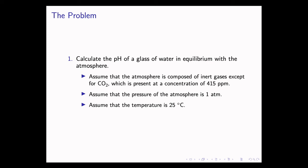The problem states calculate the pH of a glass of water in equilibrium with the atmosphere. We should assume that the atmosphere is composed of inert gases except for CO2, which is present at a concentration of 415 parts per million. We can also assume that the pressure of the atmosphere is one atm, and finally we can assume that the temperature is 25 degrees Celsius.